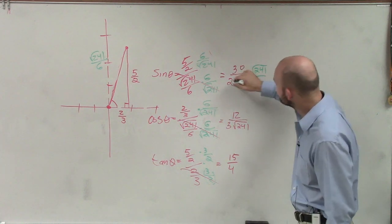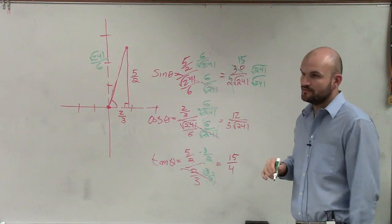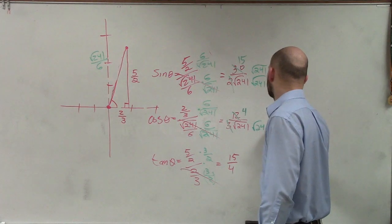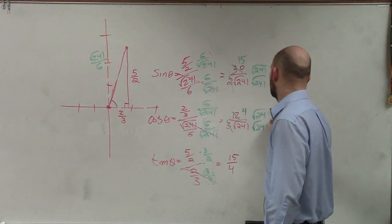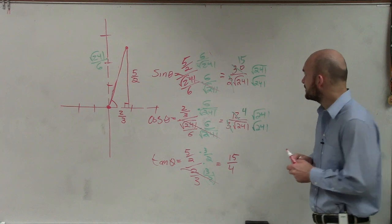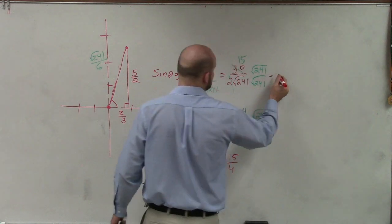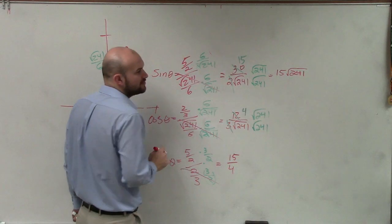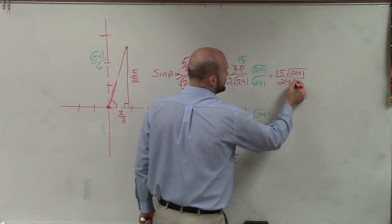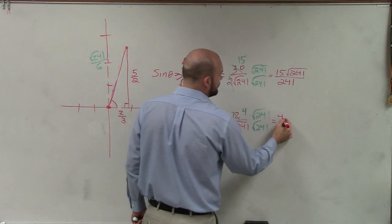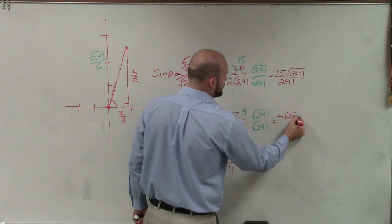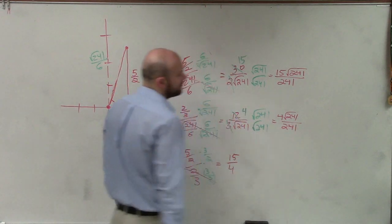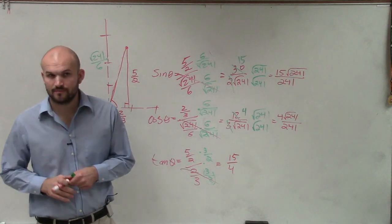By rationalizing the denominator, you guys also know that I can simplify this to 15 and I can simplify that to 4. So now, my final answer is going to be 15 times square root of 241. Square root of 241 times square root of 241 is just going to be 241. Over here, it's going to be 4 times square root of 241, all over 241. And then here is going to be 15 over 4.